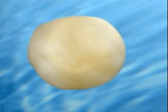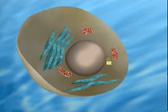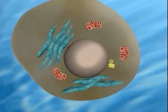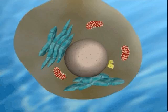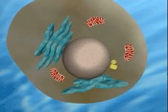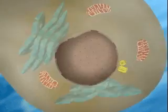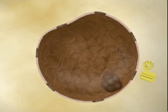Mitosis is the process by which the contents of the eukaryotic nucleus are separated into two genetically identical packages. Chromosomes replicate prior to the beginning of mitosis.